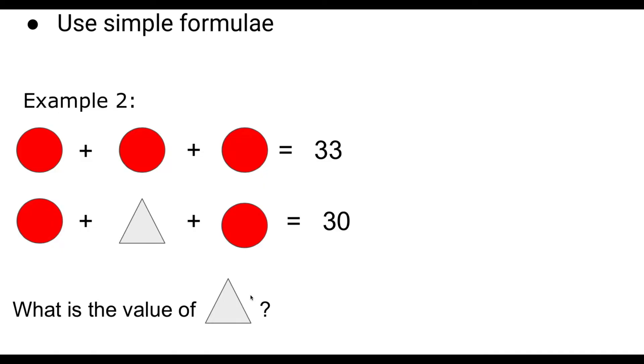Looking at the next point then is using simple formulae. So looking at the example, we have three circles here. A circle plus a circle plus a circle equals 33. And our next equation is a circle plus a triangle plus a circle equals 30. So what's the value of the triangle? What we need to do first is work out the value of one circle. Because once we've got that, we can add them together and work out what we've got missing. What we need to do then is say, there's three circles that make 33. So if I was to divide that by three, I should get the value of each one. 33 divided by three, you should know, is 11.